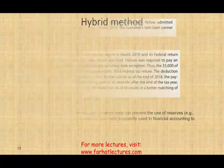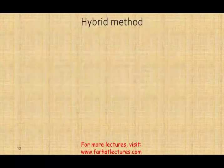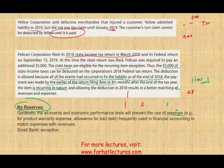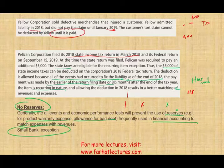There are no reserves for tax purposes. The all-events and economic performance tests prevent the use of reserves — such as estimating product warranty expense or allowance for bad debt. These are frequently used in financial accounting but are not allowed for tax purposes. There are limited exceptions for small banks, but generally reserves cannot be used.